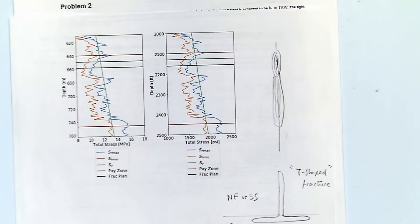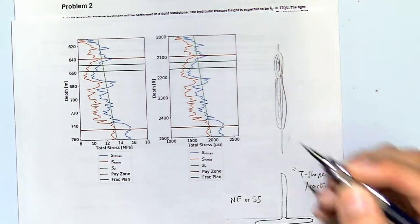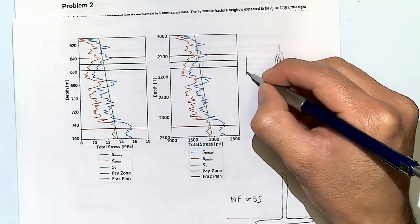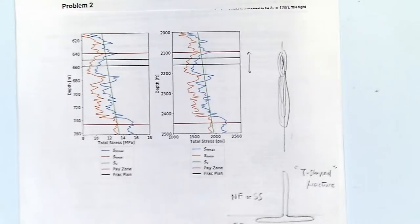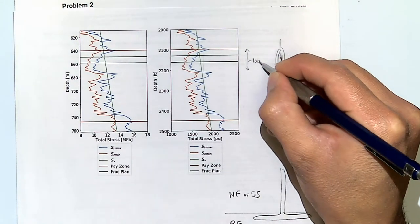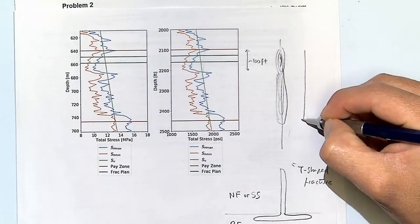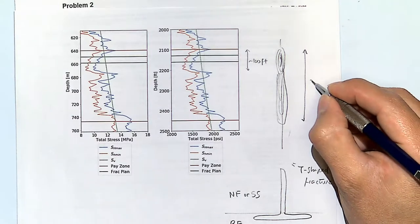Regarding fracture height: if you inject at a relatively low pressure it will grow about 100 feet, but if it extends further it will go more or less up to here — about 300-something feet. So the total is about 350 feet.